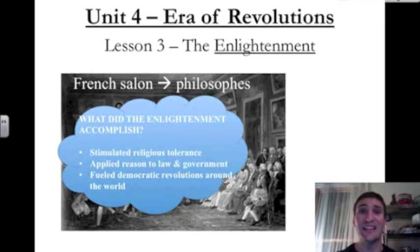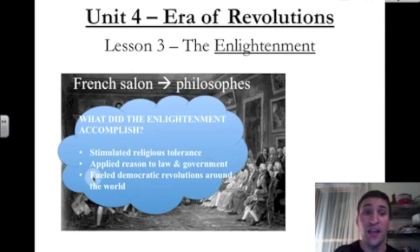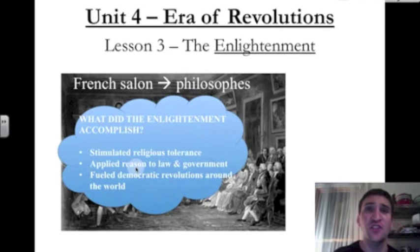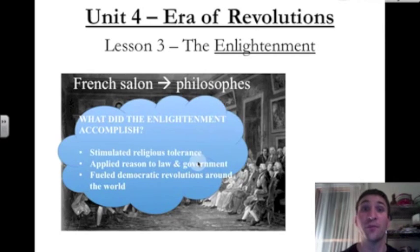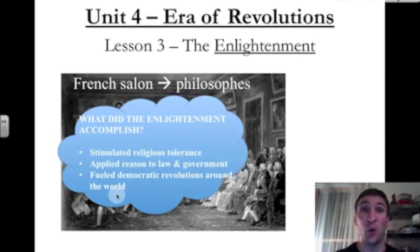What did the Enlightenment accomplish? Why do we need to talk about it? It stimulated and started religious tolerance in Europe. It applied reason to the issues of law and government — what's the best way to govern, what are the best laws to use for people? And it also fueled democratic revolutions around the world. The Enlightenment was an important time for thinkers to discover things about human nature.